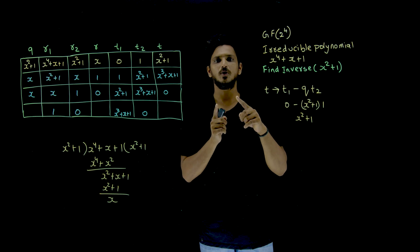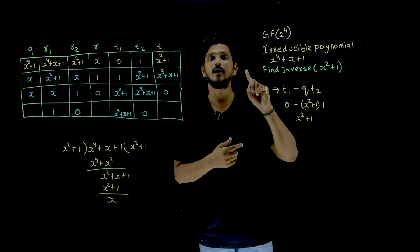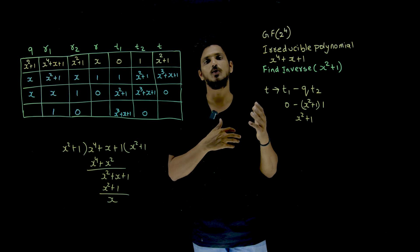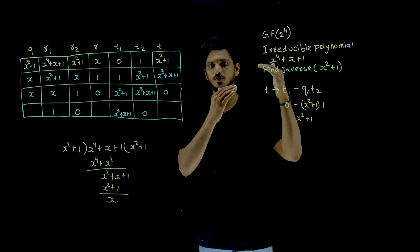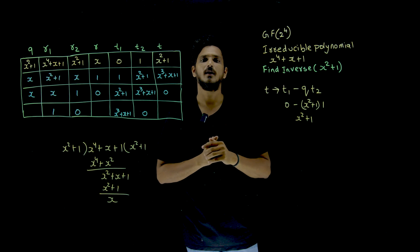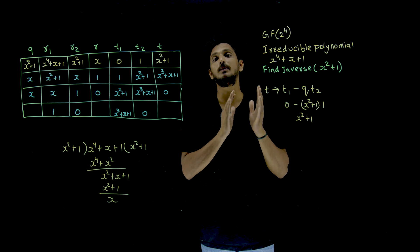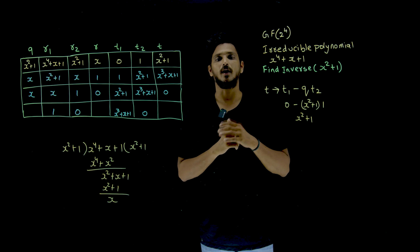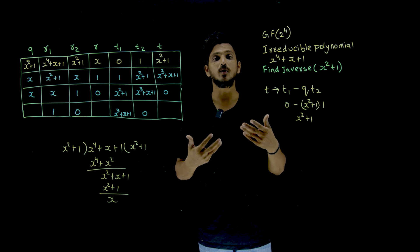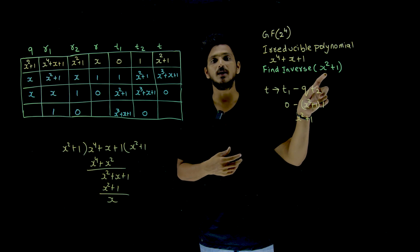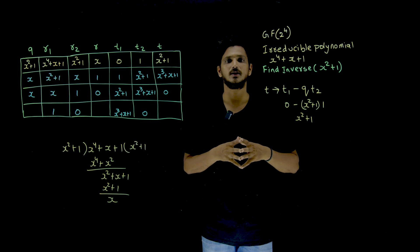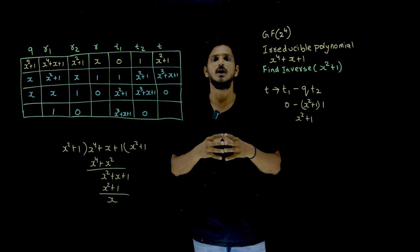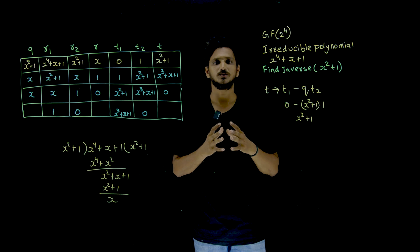If you multiply these two elements — x^2 + 1 and x^3 + x + 1 — and divide by the irreducible polynomial using the multiplication operation of GF(p^n), you are going to get the value 1. This is how we identify the inverse of a given element using the Euclidean algorithm. Hope you understand this example. If you have any questions, please post them in the comment section below. Thanks for watching — please subscribe to our channel and press the bell icon for the latest updates. Thank you.